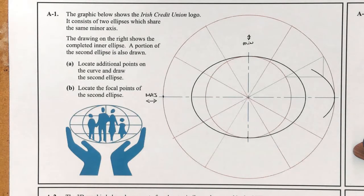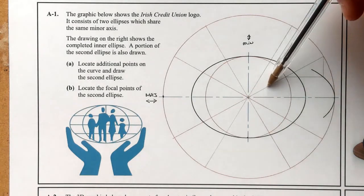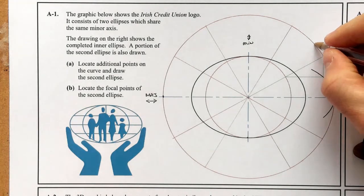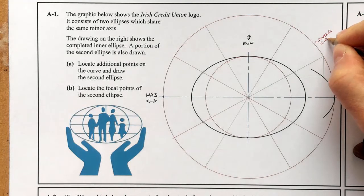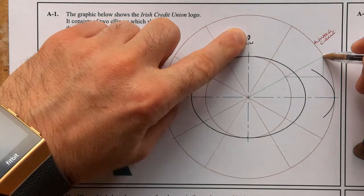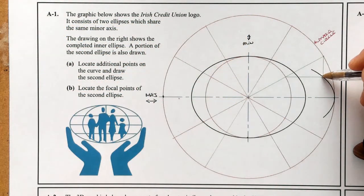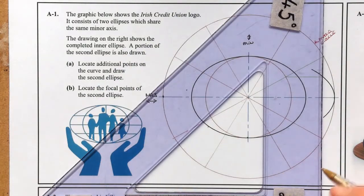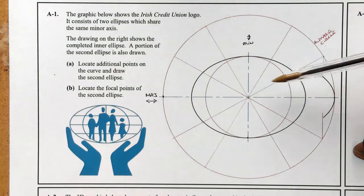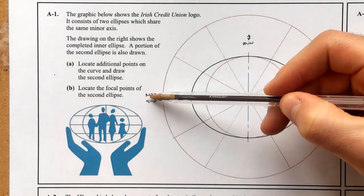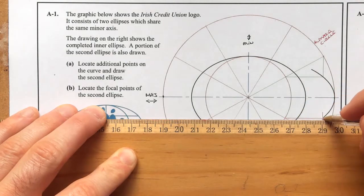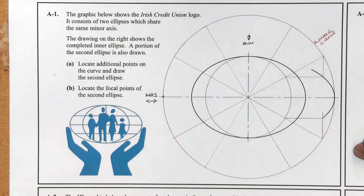The method is: where our construction lines hit the major circle, we go parallel to the minor axis. So following the green line out to where it hits the major circle, I go parallel to the minor axis — downward on this side, upward on the other. Likewise, where the line hits the minor circle, I go parallel to the major axis, which is left and right, identifying further points on the ellipse.